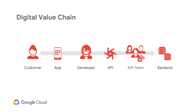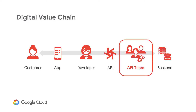So to start things off, let's take a look at the digital value chain. You might have seen this diagram before, but to briefly explain, the digital value chain shows the relationship between the various teams and technologies, from the end consumer all the way down to the backend systems. For this session, we'll be focusing specifically on the API team shown here in the chain.